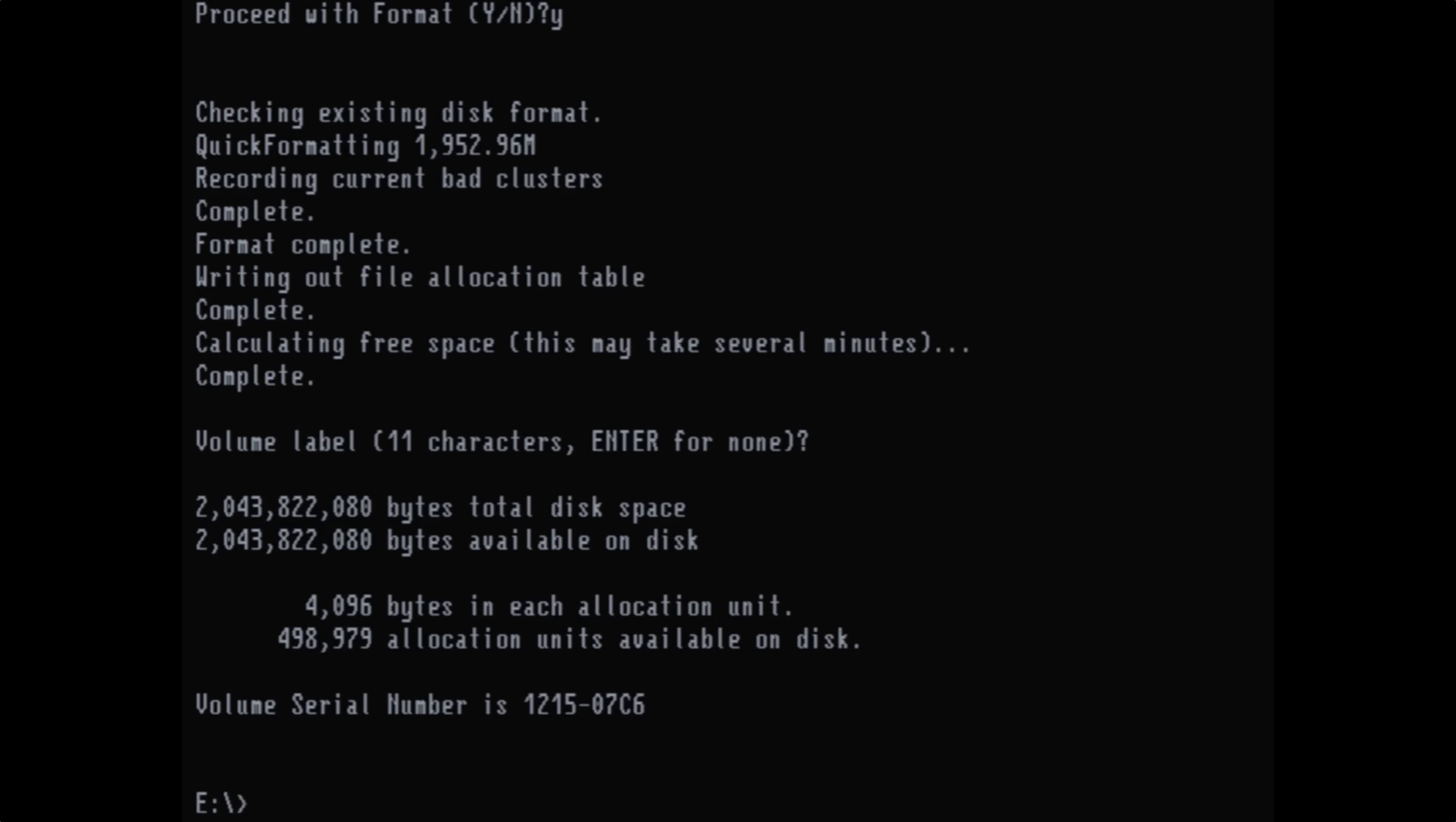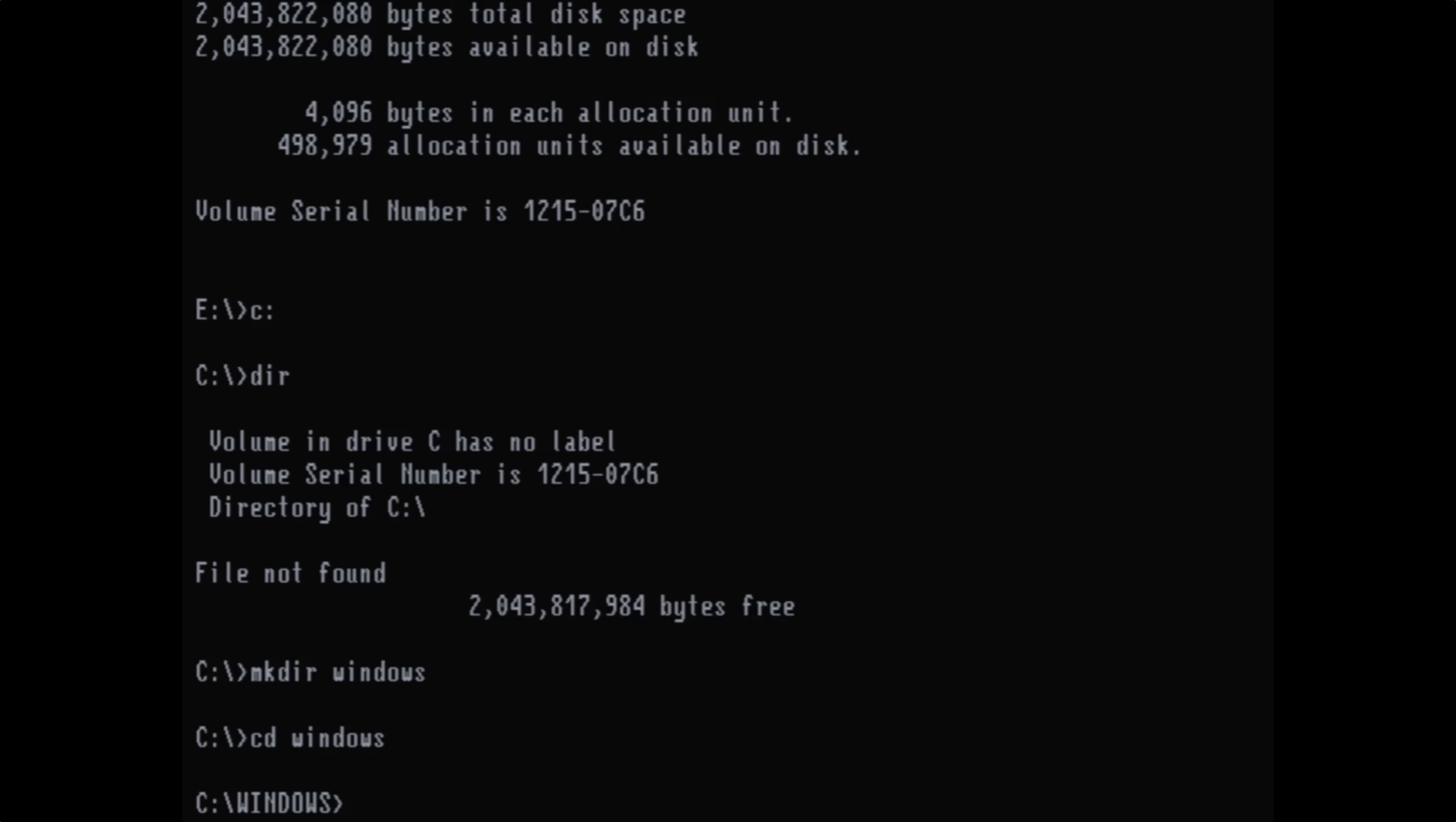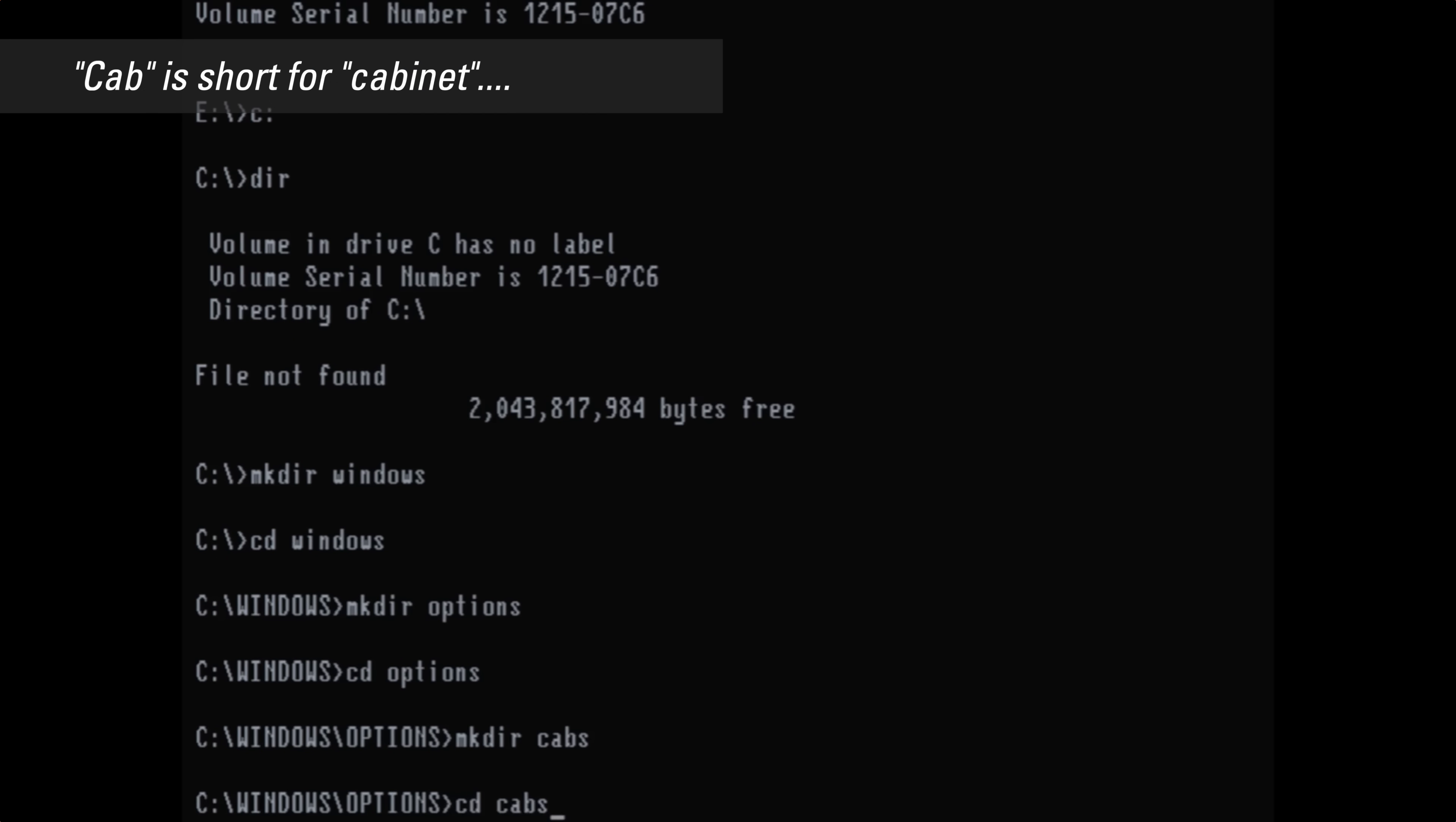Don't need to give the volume a label. So in this case, I'm going to go ahead and switch over to the C drive, and it's obviously completely empty. First thing I'm going to do is I'm going to create a few folders, and they need to be nested. The first one is called Windows. Then I'm going to switch to it, and then inside Windows, I'm going to create a folder called options. The mkdir command is short for make directory, cd change directory, and then the final one inside there is going to be called cabs. And then we switch over to that.